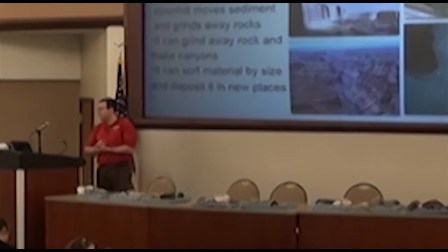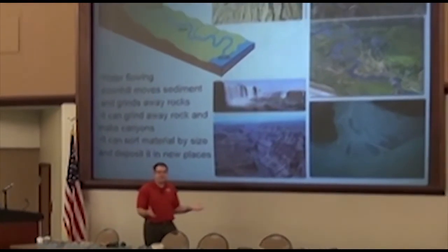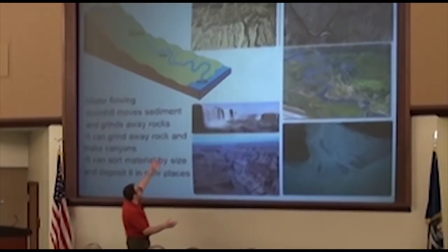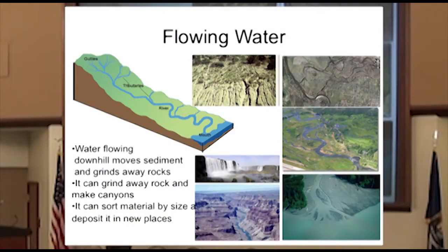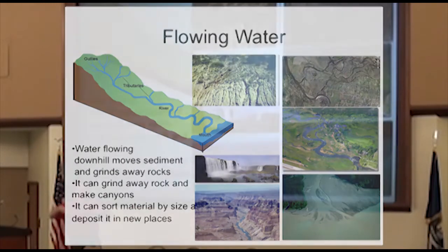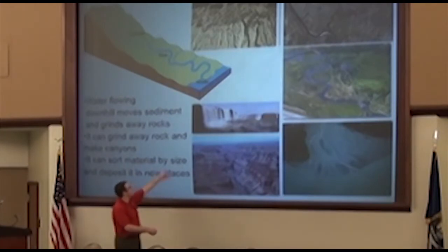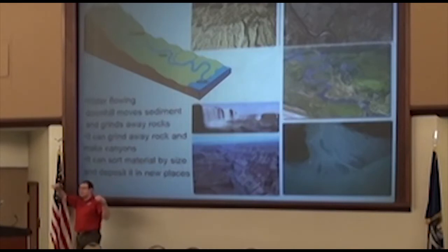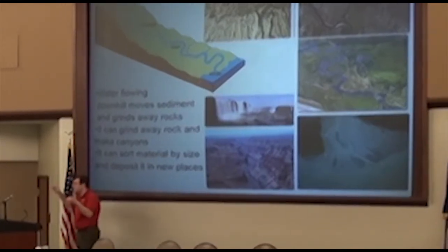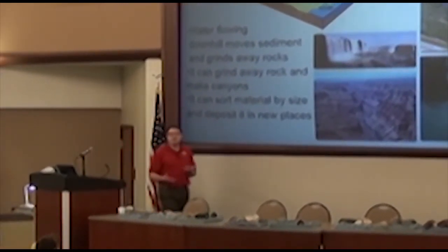The next type of erosion is flowing water. This is what most people think of when they think of erosion — what rivers do. Rivers can cut canyons like the Grand Canyon. As the water pulls rocks along, it grinds away the bedrock. We see waterfalls, or even tiny little rills: after it rains on a fresh pile of dirt, you'll see little things that look like tiny rivers. Flowing water can pull material down.